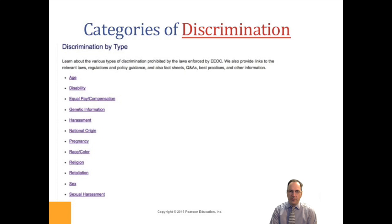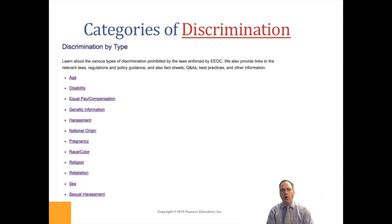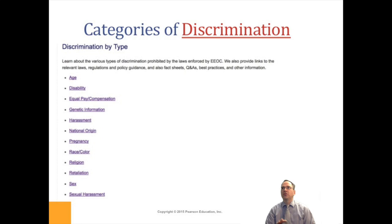We have to recognize individual differences; otherwise we're falling into the stereotyping trap, and it's really unfair to people. After this video, look at the EEOC categories of discrimination — things like age, disability, equal pay, genetic information, harassment, national origin, pregnancy, race, color, religion, retaliation, sex, and sexual harassment. Click each link to see how the federal government has defined each of these.